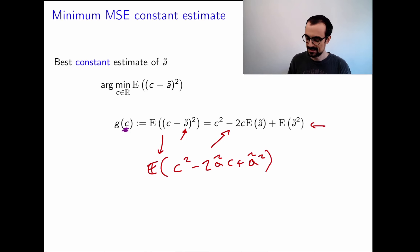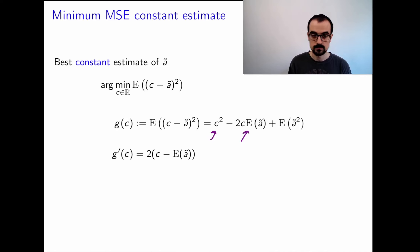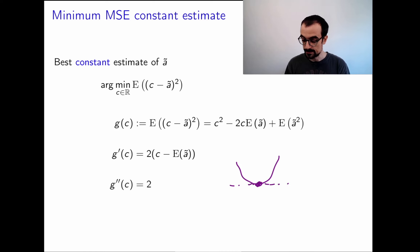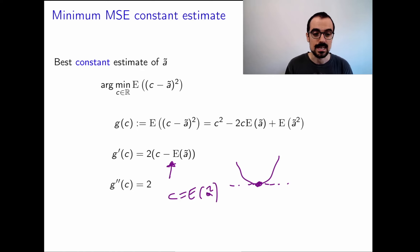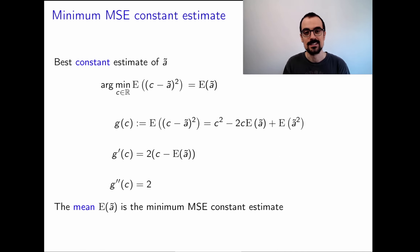How do we minimize a function with only one argument? We look at its derivative. This is a quadratic function, so the derivative with respect to C is 2C minus 2 times the mean. It's convex because the second derivative is equal to 2. The minimum is where the derivative equals zero, which gives us C equal to the mean. This tells us that if you take any random variable and want to approximate it with a constant, the best constant from the mean squared error point of view is the mean. That's another interpretation of the mean of a random variable.